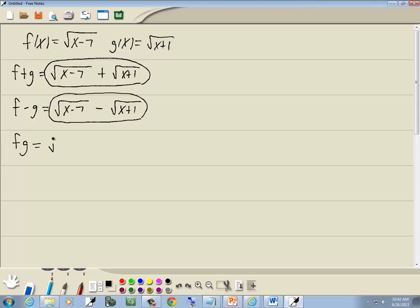f times g. Well, we'll put one radical next to the other. Again, they're automatically separated by each being enclosed in a square root. Now, when you've got the indexes the same and you're multiplying these together, you can multiply what's underneath the square roots. So I'll take x minus 7 times x plus 1 and then put them underneath a single square root.